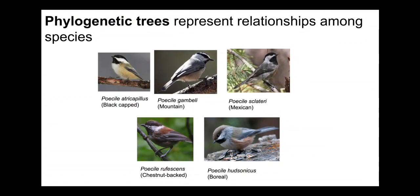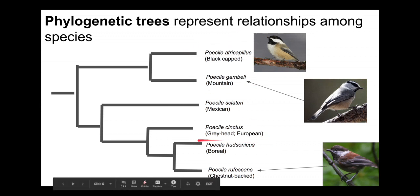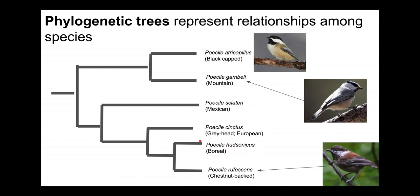Typically phylogenetic trees represent the relationship among species. Throughout this video, as a case study, I will use various chickadees such as black-capped chickadee, mountain chickadee, Mexican chickadee, and so forth. Here's a phylogenetic tree showing the relationship of several chickadees from throughout North America, representing which species are most closely related to each other. For example, genetic evidence indicates that the black-capped chickadee and the mountain chickadee are closely related, and the boreal chickadee and the chestnut-backed chickadee are closely related.